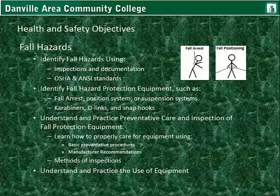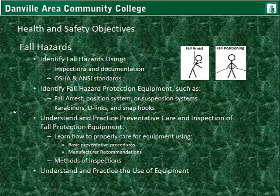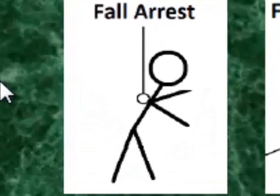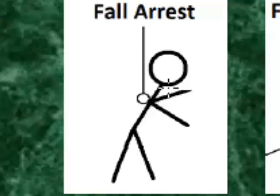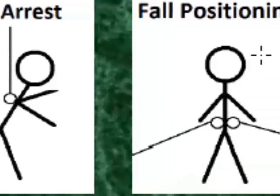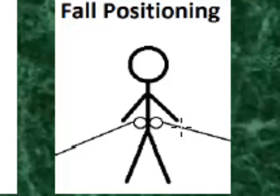Health and safety objectives — fall hazards. Identify fall hazards using inspections and documentation, also OSHA and ANSI standards. Know when to use and be able to identify the fall hazard protection equipment needed. This equipment could be fall arrest positioning systems or suspension systems, as well as carabiners, D-links, and snap hooks. Here we see a diagram of the fall arrest equipment — a tag on a device designed for fall arrest. The safety line goes to a harness and protects the person in the event they fall off a structure. Fall positioning systems limit the distance you may travel while on a structure, preventing you from falling over the edge because you can't reach it. That is the idea of a fall positioning and travel limiting system.